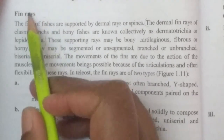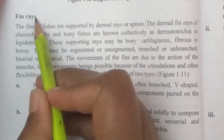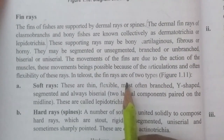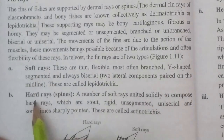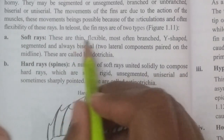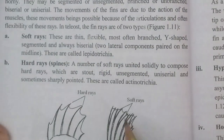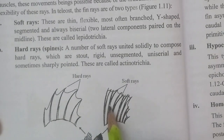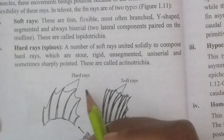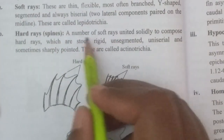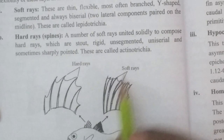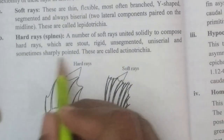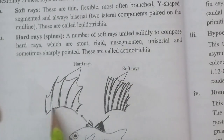Fin rays are the supporting structures made of bone, cartilage, or fibrous tissue. There are two types: soft rays, which are thin, flexible, most often branched and segmented; and hard rays (spines), which are formed by a number of soft rays united together — stout, rigid, unsegmented, or simply pointed.